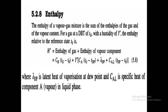Enthalpy of a vapour-gas mixture is the sum of the enthalpy of the gas and of the vapour content. For a gas at a dry bulb temperature Tg with a humidity of Y', the enthalpy relative to the reference state T0. The mathematical relation is: H' = Cb(Tg - T0) + Y'[Ca(Tg - Tdp) + λdp + Cal(Tdp - T0)].